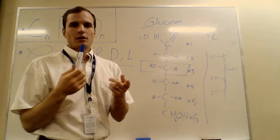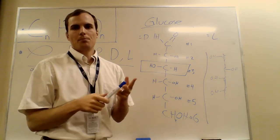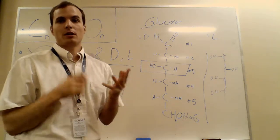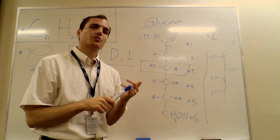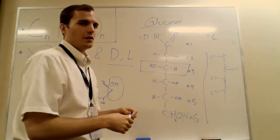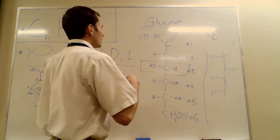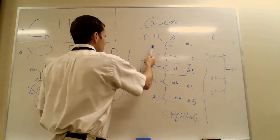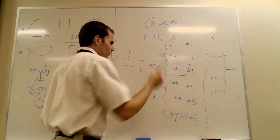All right. Last thing. We've talked about empirical formula, alpha and beta, glycosidic bonding, and dextro and levo. Last thing that we're going to talk about on this particular video is monosaccharides.